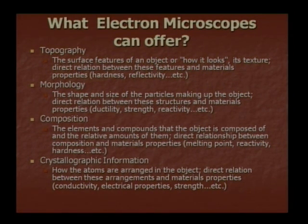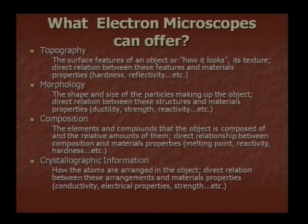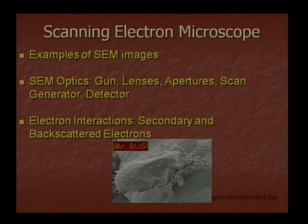What can an electron microscope offer? Why do we require an electron microscope? It gives information about topography, morphology, composition and crystallographic information. Topography: how the surface looks — hardness, reflectivity. Morphology: the shape and size of the particle. Composition: melting point, reactivity. Crystallographic information: conductivity and electrical properties. This is the strength of the scanning electron microscope.